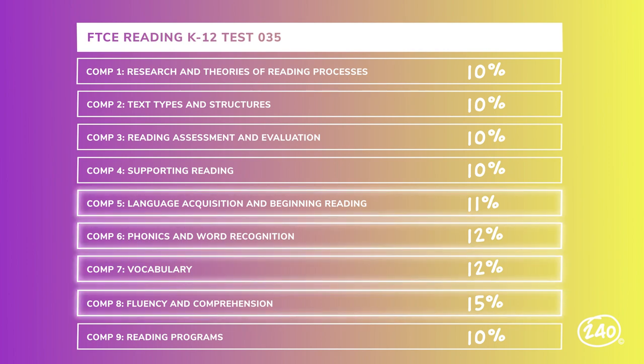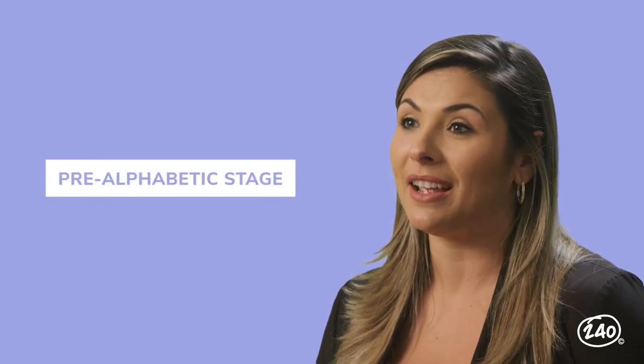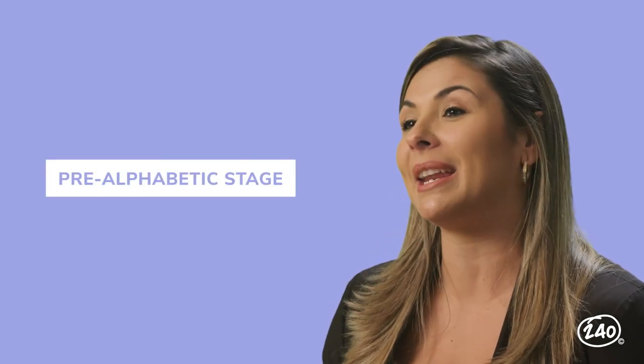We'll start with the heart of what reading really is — the topics that carry a little more weight for your score. Let's discuss Competency 5: language acquisition and beginning reading. When it comes to beginning reading, the stages of word recognition are essential to know. Let's take a peek inside our study guide to hear about the first one, the pre-alphabetic stage.